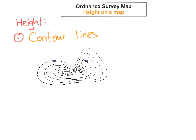Contour lines are a way that we can represent height on an ordnance survey map. They are lines that you see on the map, like little circles — not exactly circles because they take different shapes, but they basically go the whole way around. Each one has a value; for example, this one here is 7,000 meters above sea level, and the next ones are 7,010, 7,020, and so on, all the way in to 7,200 meters above sea level at the center.